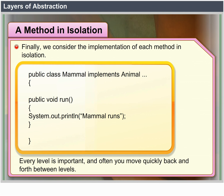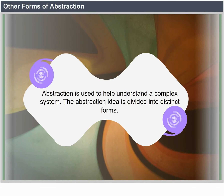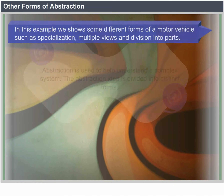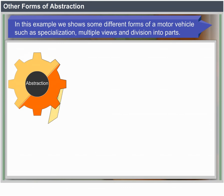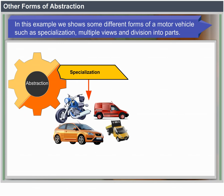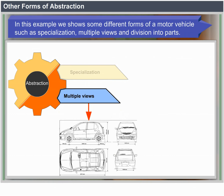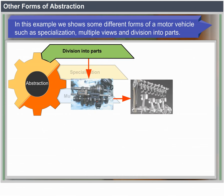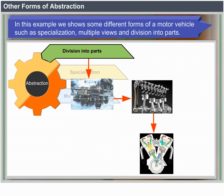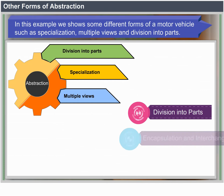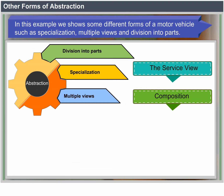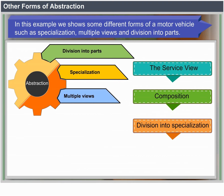Every level is important and often you move quickly back and forth between levels. Other forms of abstraction: Abstraction is used to help understand a complex system. The abstraction idea is divided into distinct forms. Some different forms for a motor vehicle include: Specialization, Multiple views, Division into parts, Encapsulation and interchangeability, Interface and implementation, The service view, Composition, Division into specialization, and Patterns.